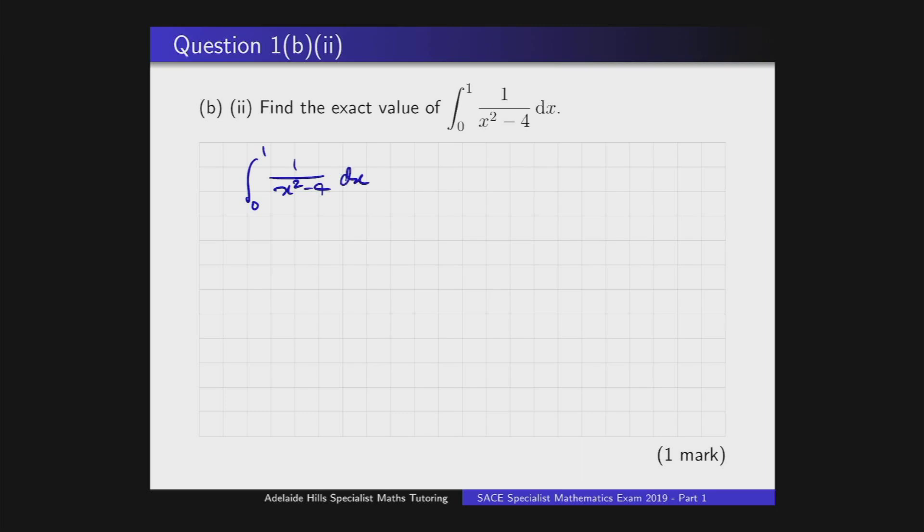And so the exact value of this integral from zero to one, 1 over x squared minus 4 dx, is going to be equal to a quarter—that's just a multiplicity of constants we can take that outside—and the part that depends on x is going to be a term that looks like the natural log of the absolute value of x minus 2 over x plus 2. And we need to evaluate that at the two boundaries, at the limit of x equals one and the limit of x equals zero.